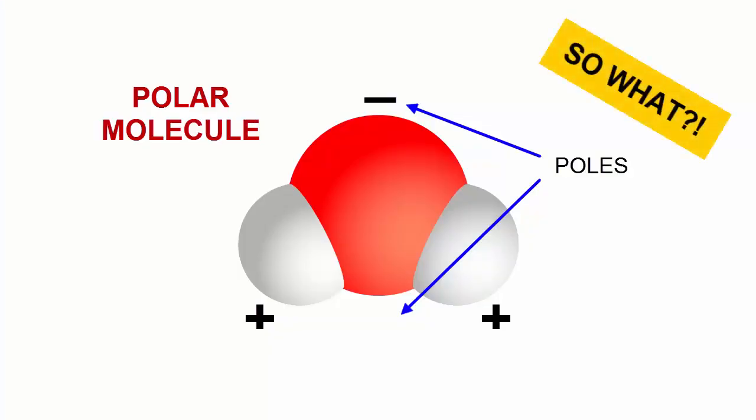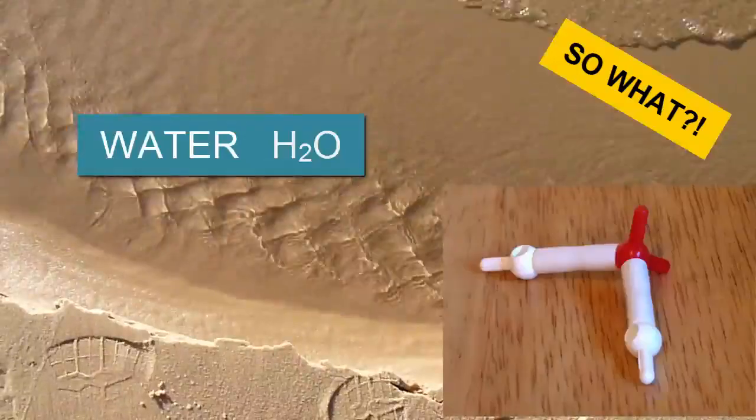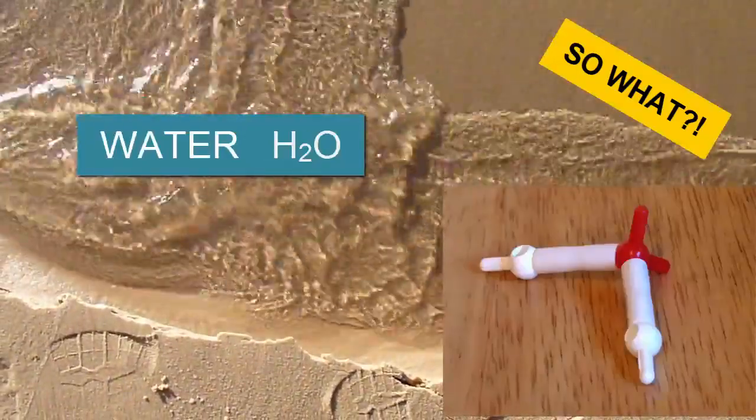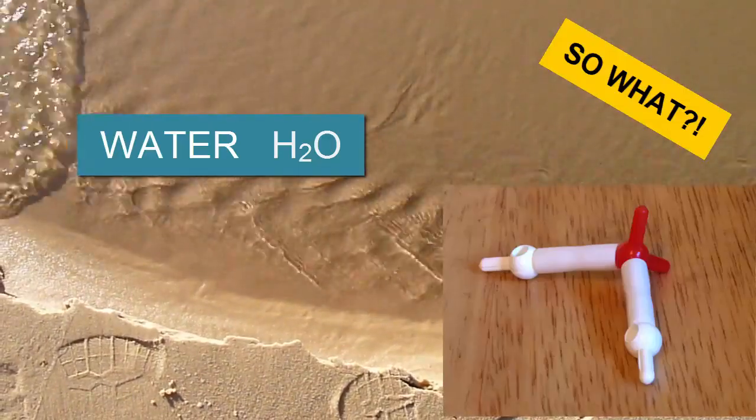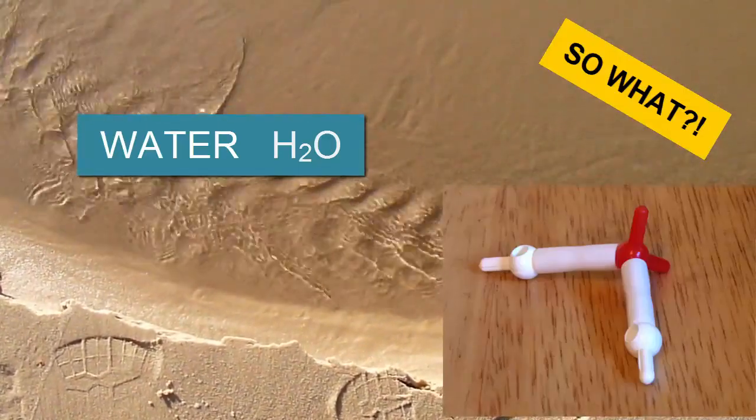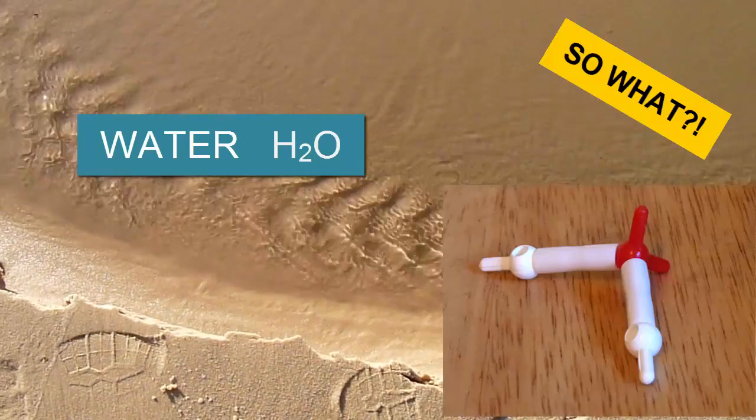So what? Why is it important that water is polar and has a bent shape? Because that shape greatly impacts its behavior, a behavior that is different than almost any other common substance, and that behavior is what allows life to function. Let's learn more.